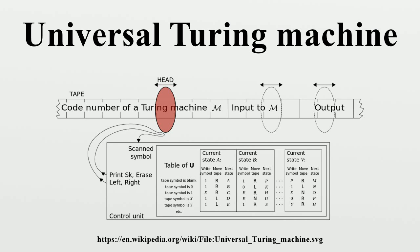It is also known as Universal Computing Machine, Universal Machine, or Machine U. In terms of computational complexity, a multitape universal Turing machine need only be slower by a logarithmic factor compared to the machines it simulates.